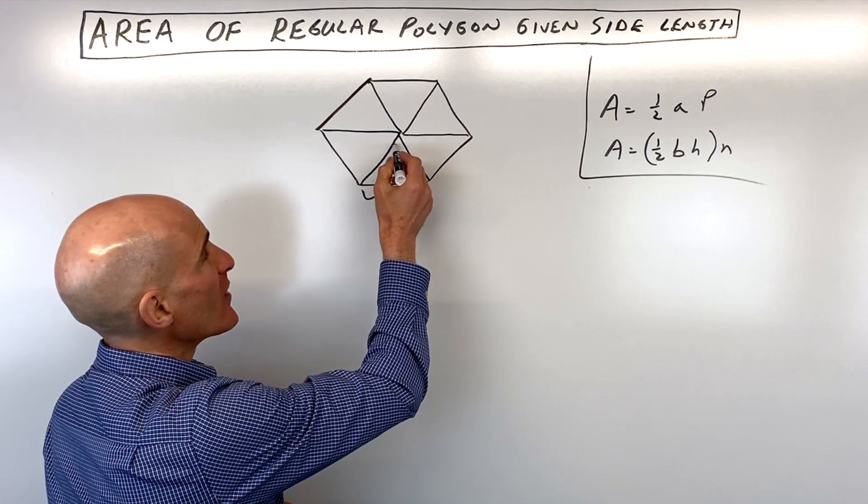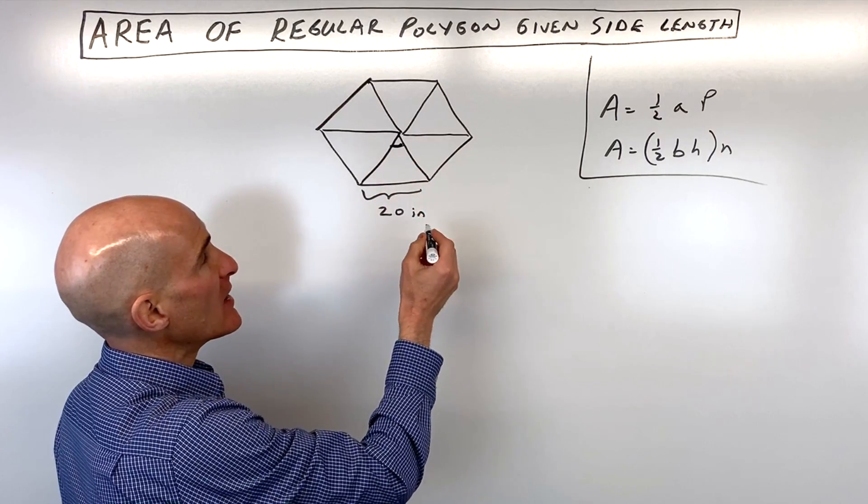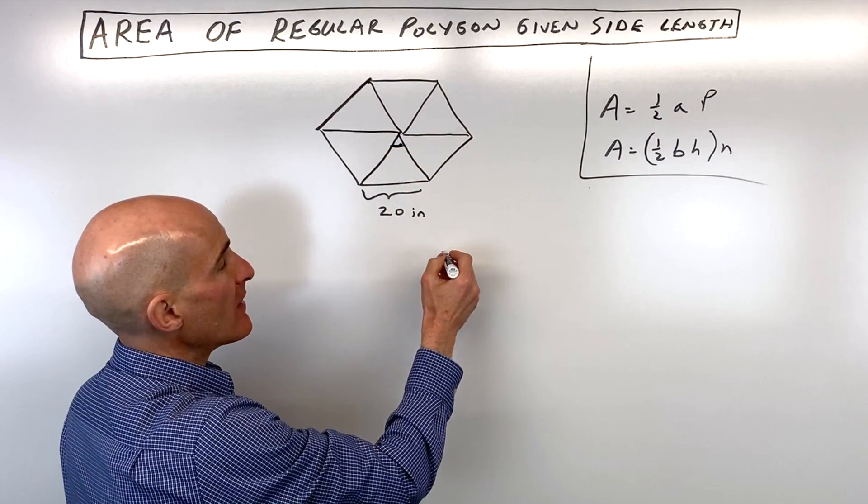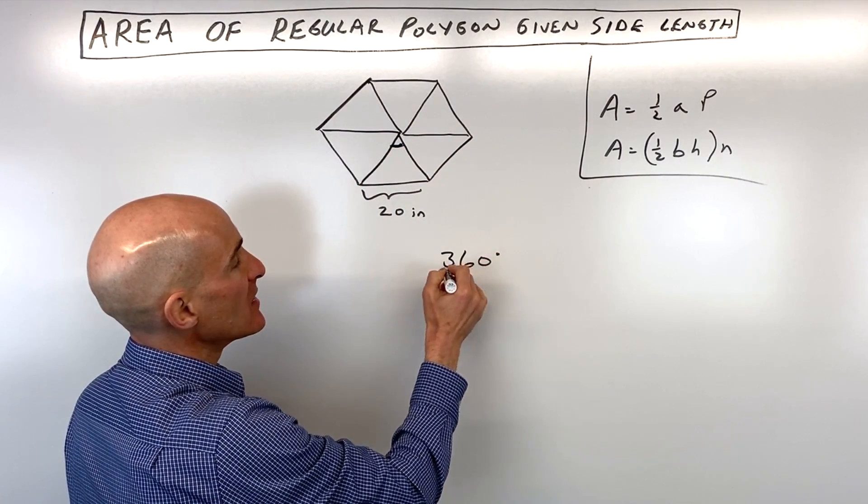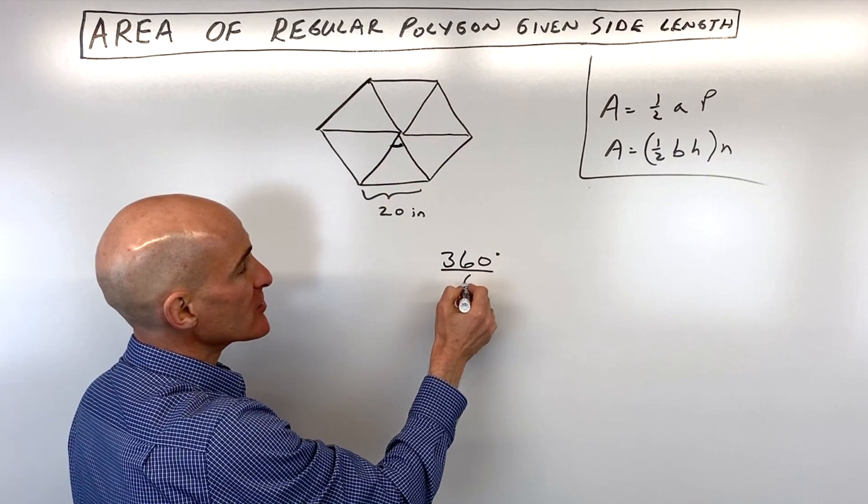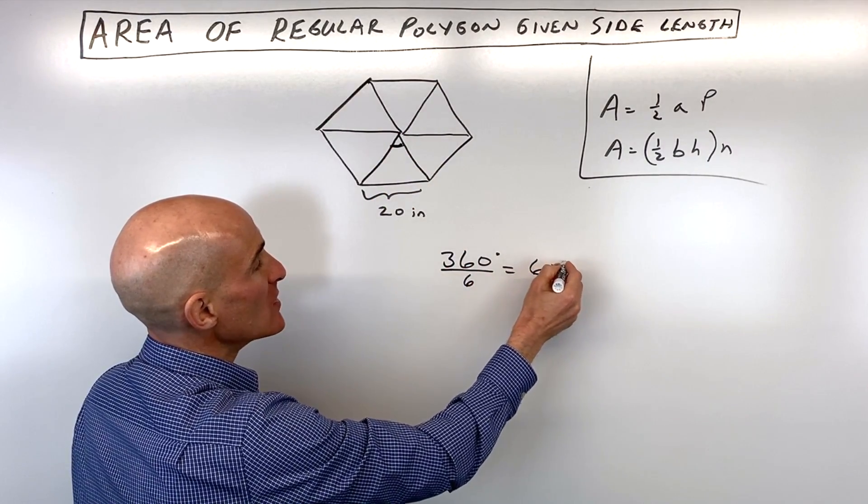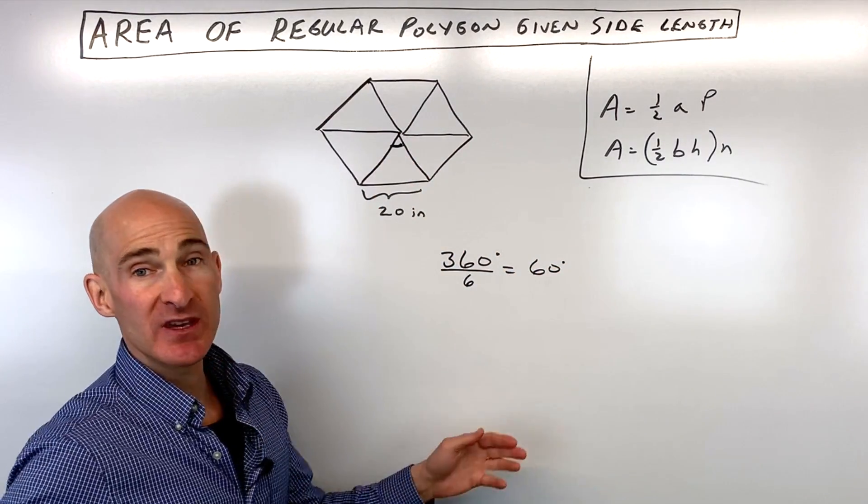The first thing we want to do is find this central angle right here. We know a circle is 360 degrees, and since there's six triangles, we divide this by six. So each of these central angles is 60 degrees.